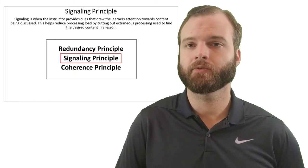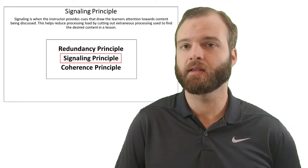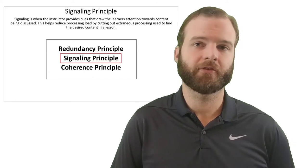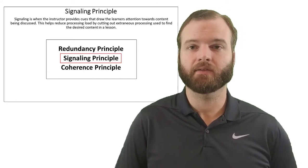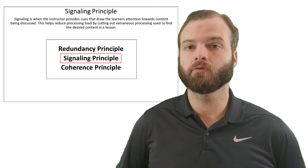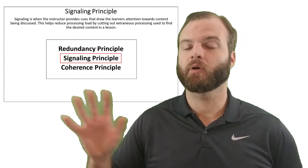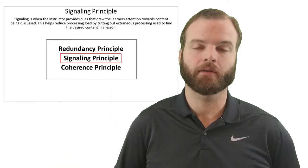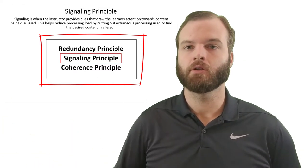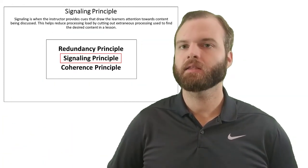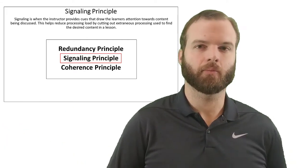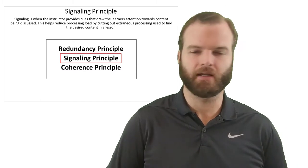Now we're going to go over three principles that we can use in our instructional design to help foster good working memory in our lessons. The first would be the signaling principle. The idea behind signaling is to use visual cues that help students understand exactly where the content is that we are talking about. This can be something like circling where we're at, using bolded words, using highlighting — anything to draw a student's attention to where we want it, so they're not using additional processing to wonder where the teacher is.